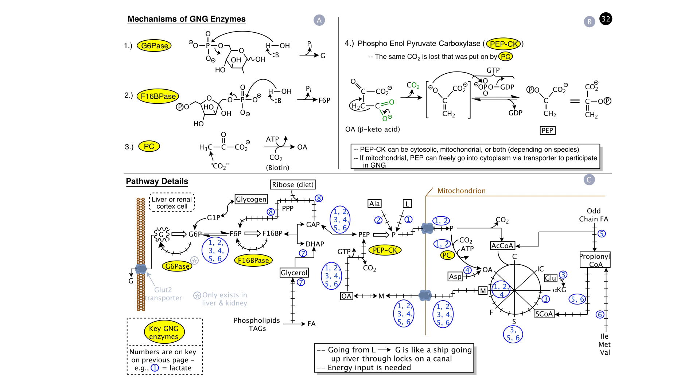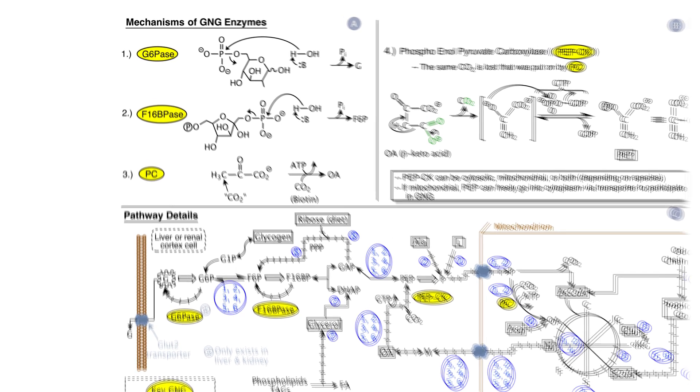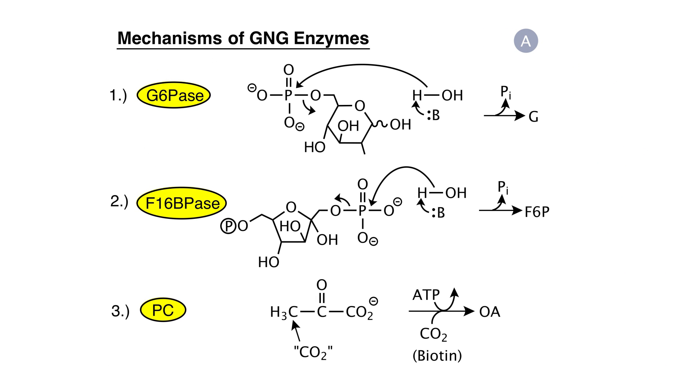Now we're going to turn to storyboard 32. Let's look at panel A, and let's start out by looking at the mechanisms by which the four key enzymes of gluconeogenesis work. The first two enzymes, glucose-6-phosphatase and fructose-1,6-bisphosphatase, carry out simple phosphate ester hydrolysis as shown.